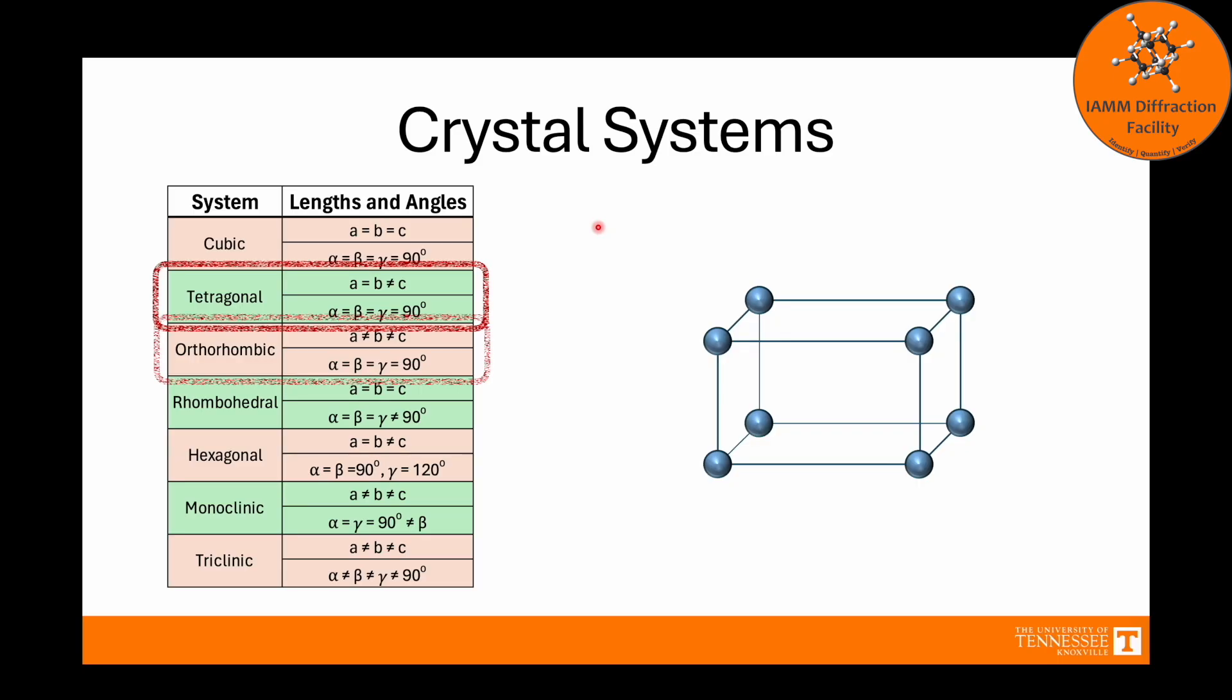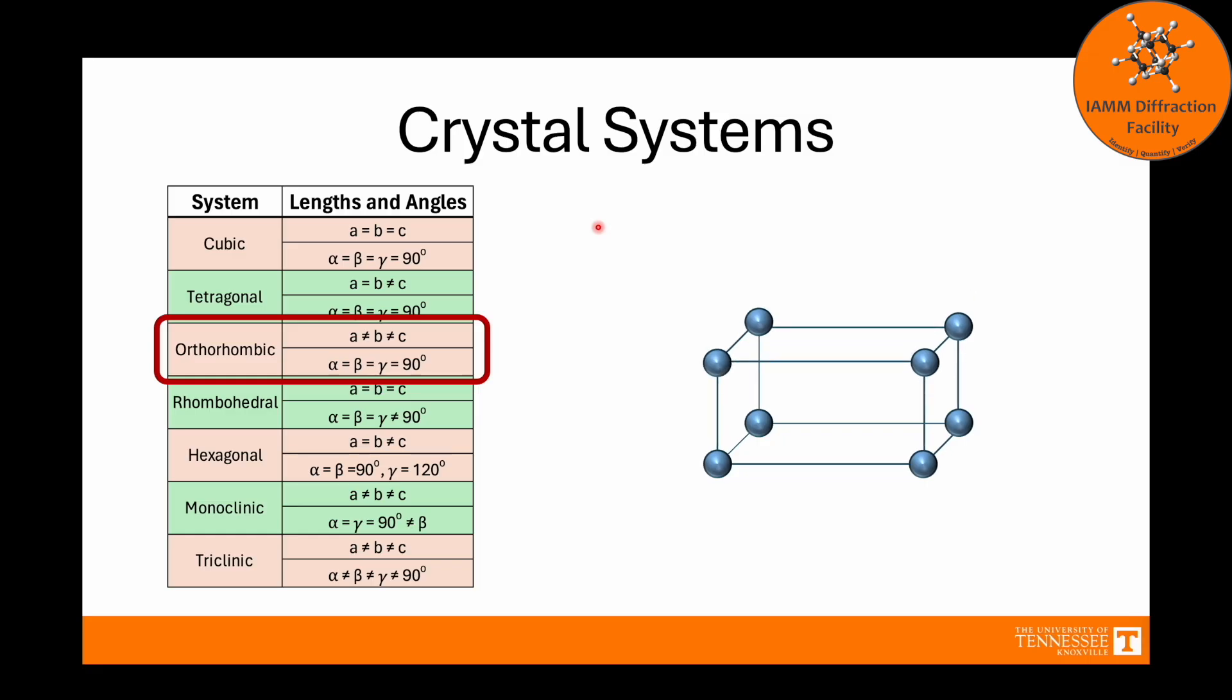Let's look at orthorhombic. This is just like tetragonal, only A does not equal B any longer, so the length of all three edges no longer equal each other. To get the orthorhombic unit cell, we can take the tetragonal and then make one of the other two edges either longer or shorter. I made that one shorter, and now we have an orthorhombic cell.